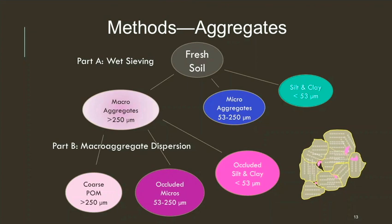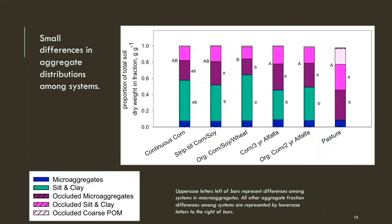Note that in my cartoon I don't have any free silt and clay represented, but we assume there are a lot of soil particles that are not aggregated. Looking at the distribution of soil by weight into aggregate classes, with micros, silt and clay, and the three occluded fractions shown in striped pink bars — what really jumps out is that the organic system is depleted in macro aggregate formation, and also in those occluded micro aggregates within macro aggregates, made up for by having more unaggregated silt and clay.